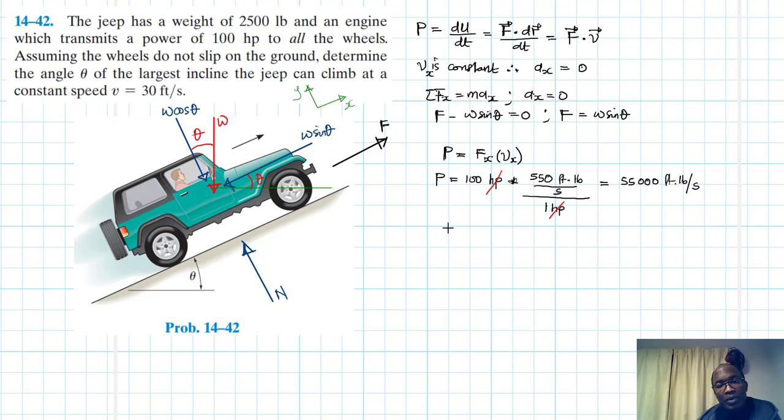Writing this, 55,000 is just equal to Fx times vx. We said our Fx is equal to W sine theta, so this is equal to W sine theta times vx. We can replace numbers there, our W is 2500, sine theta, then times vx we said is 30 feet per second.